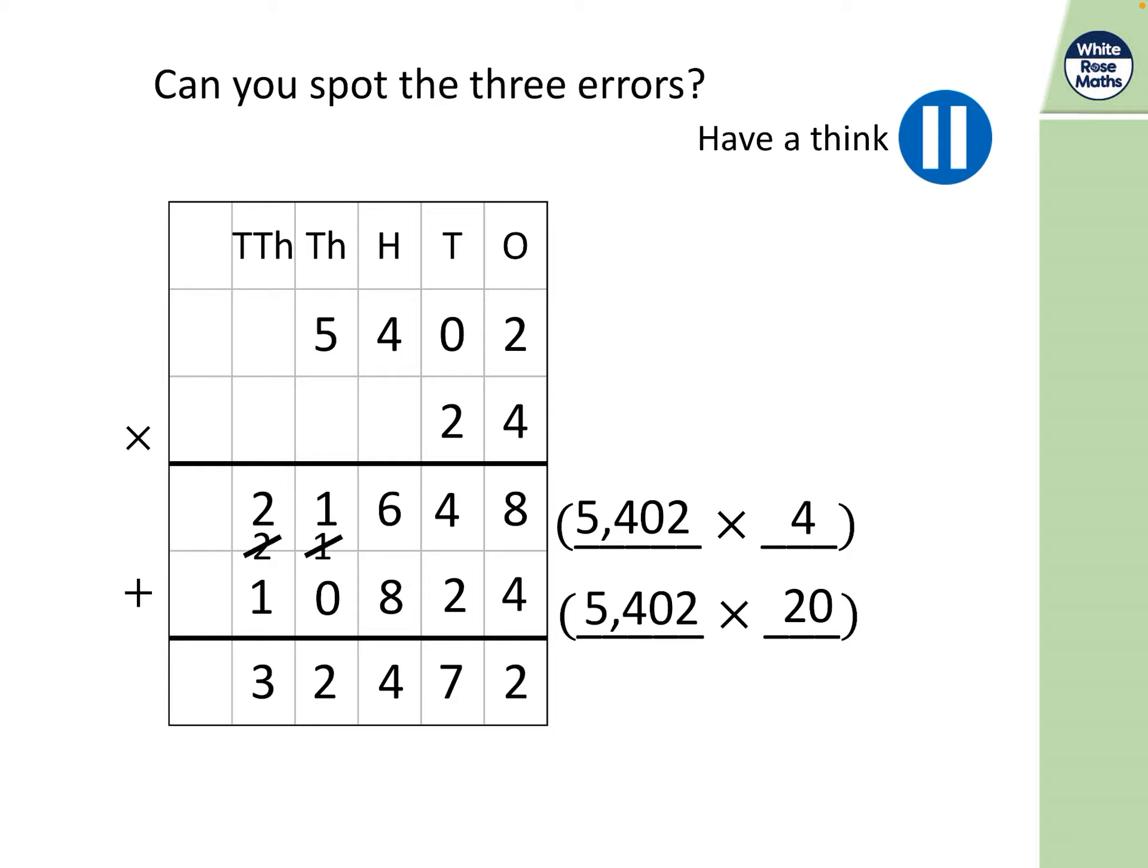Finally, can you spot the error? What has happened? What is wrong here with 5,402 times 24? Now when you get a question like this it's always best to actually go in and check it yourself. So 4 times 2 is of course 8. 4 times nothing is nothing because 4 times nothing, anything times nothing is always nothing. So we've found our first mistake. Let's see if there are any more. 4 times 4 is 16. 4 times 5 is 20 so we've got the 1 in there, carry the 2.